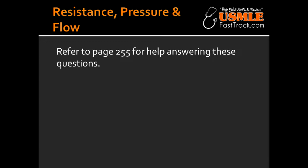How do you calculate total resistance of vessels in parallel? The total resistance in parallel is calculated as: 1 divided by R1, plus 1 divided by R2, plus 1 divided by R3, and so on.